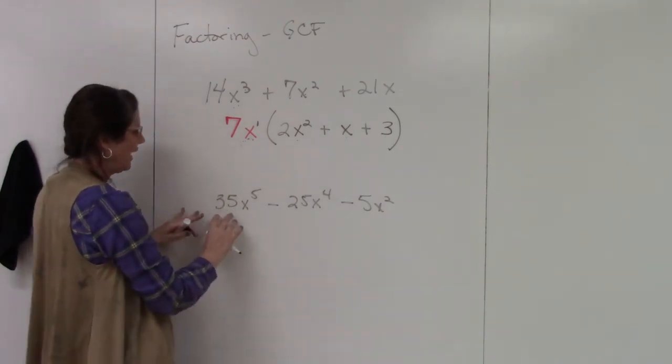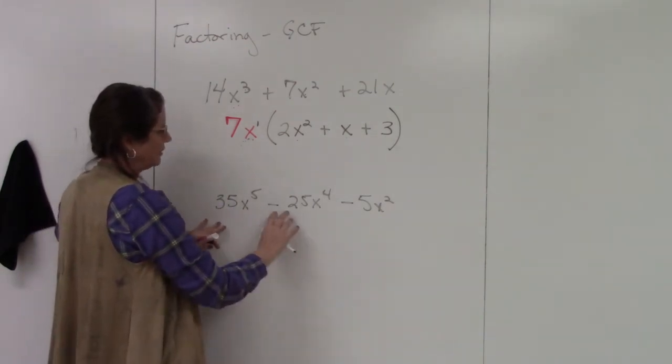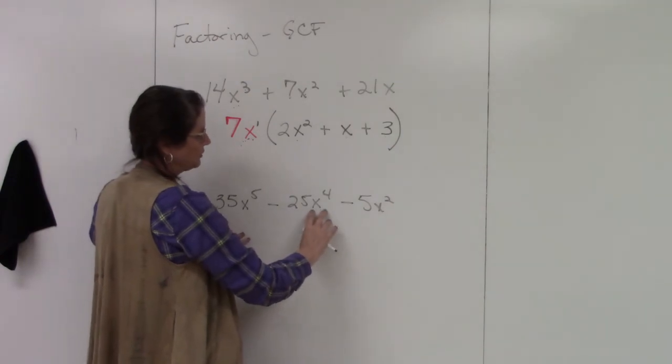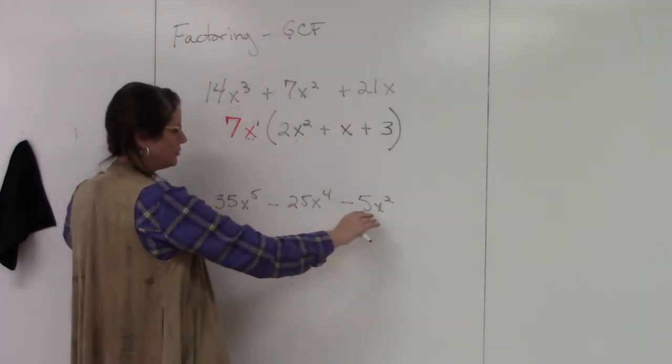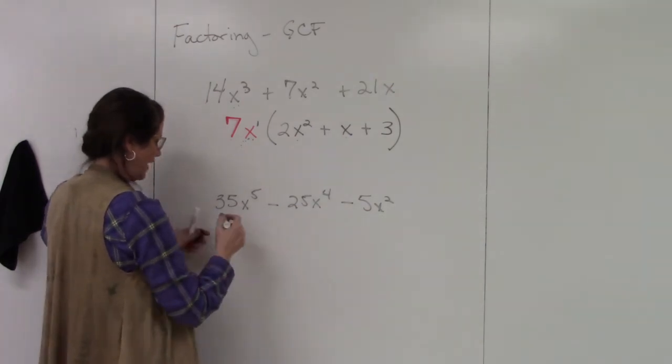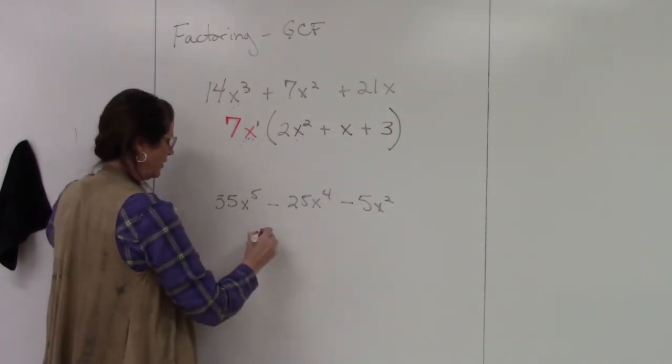Okay, let's try the next one. So I have 35x⁵, negative 25x⁴, and negative 5x². So I look at my numbers first, the coefficients, and I see that there's a 5 in common. So I'm going to factor out a 5.